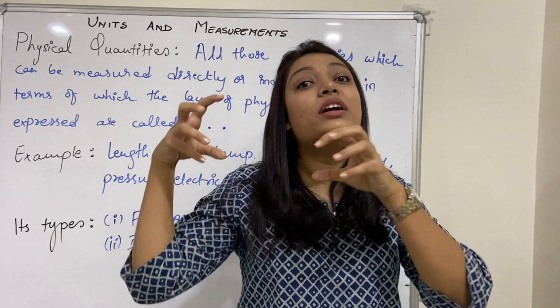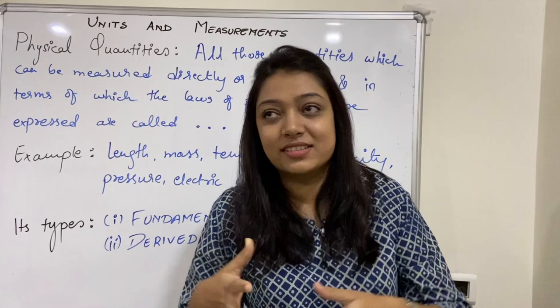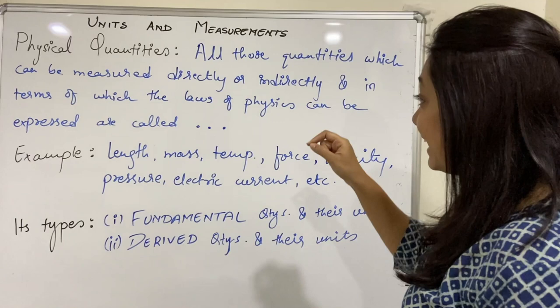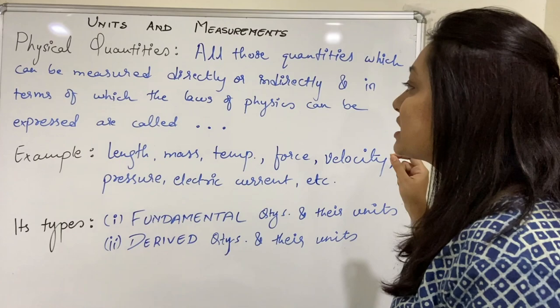Now let us understand in proper English. Physical quantities: all those quantities which can be measured directly or indirectly, and in terms of which the laws of physics can be expressed, are called physical quantities.